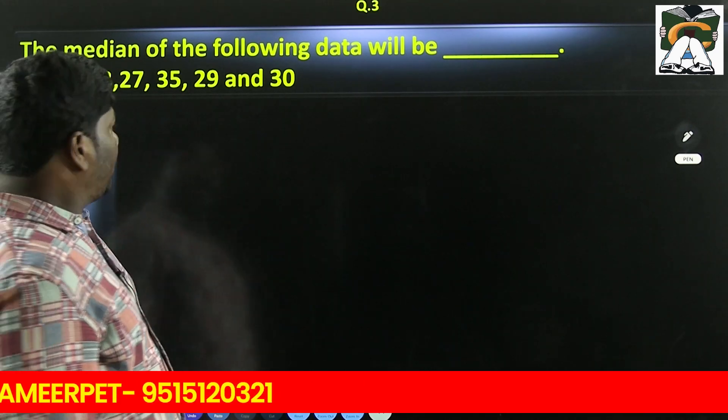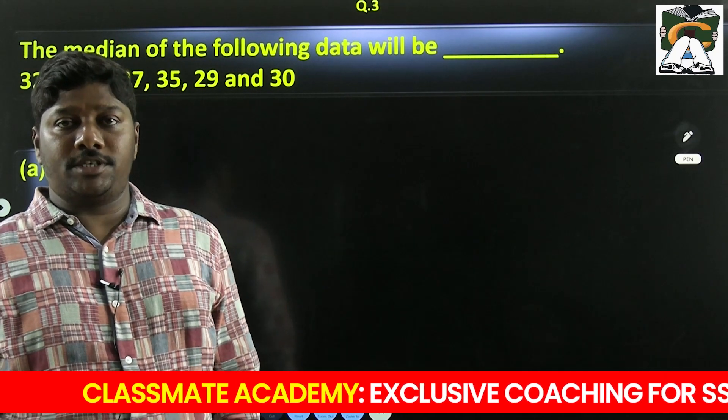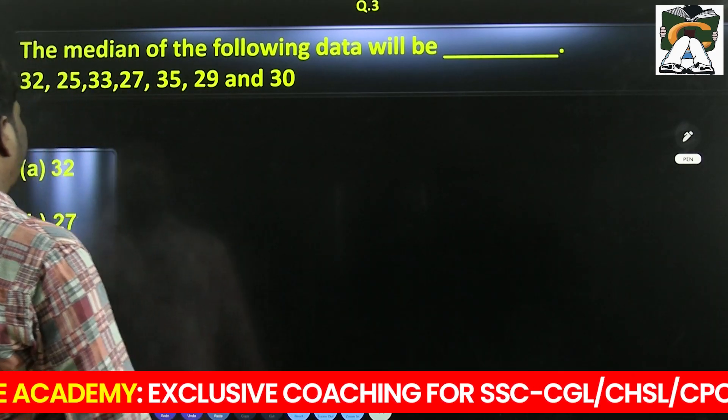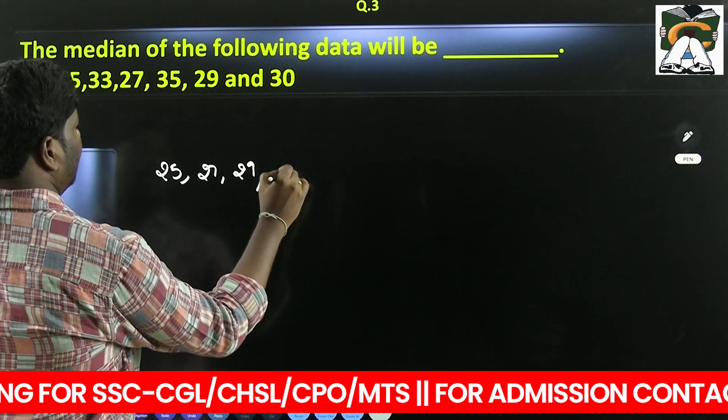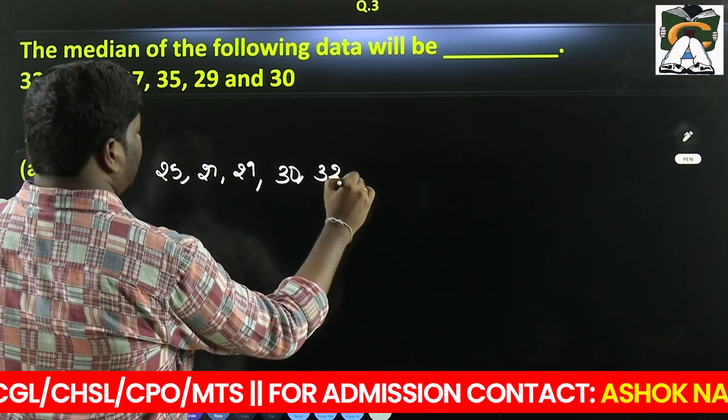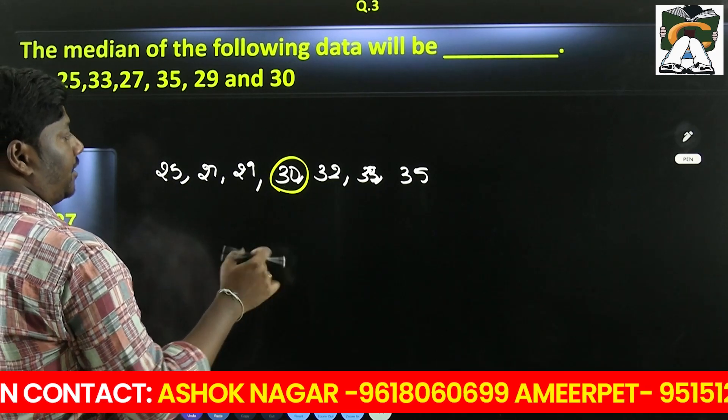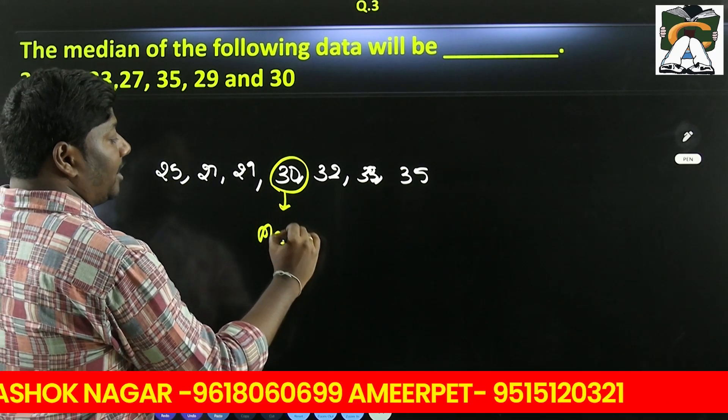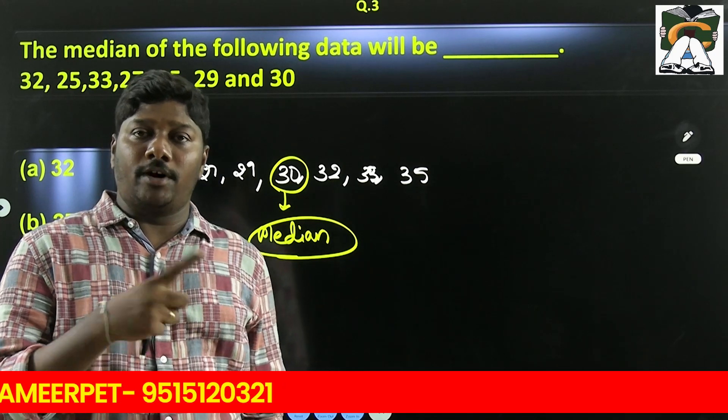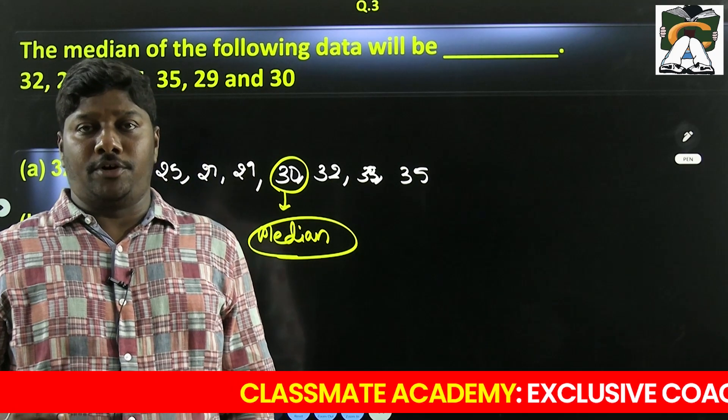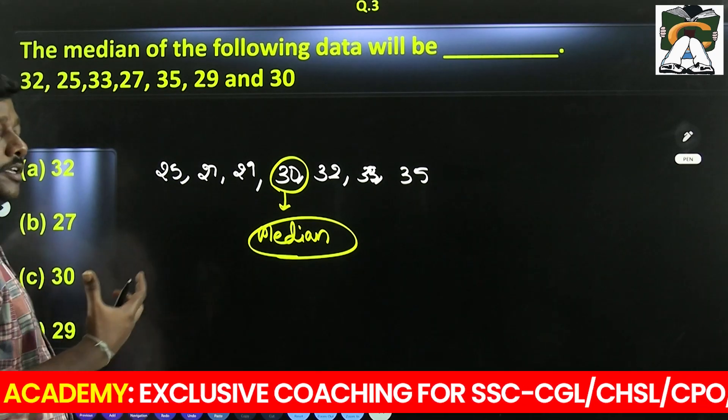Find the median of the following data. For median, first you need to write the numbers in ascending or descending order. The given numbers in ascending order are: 25, 27, 29, 30, 32, 33, 35, 35. The middle observation is the median. If there are two middle observations, their average is the median. You can arrange them in ascending or descending order - smallest to largest or largest to smallest, doesn't matter. But arrange them in order, then only you can find the median.